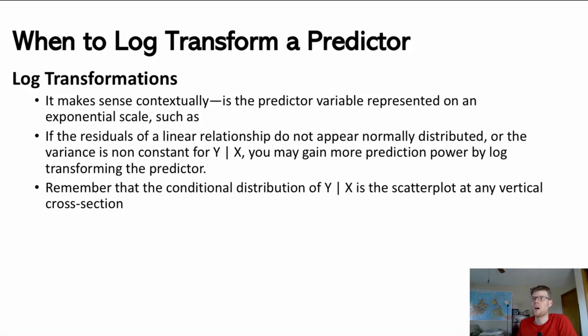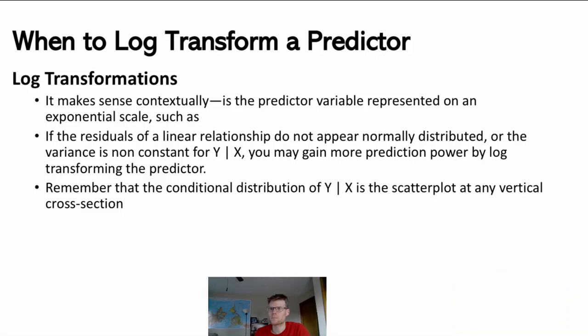Just a quick refresh here - when do we do a log transformation on a predictor? There's a couple examples where this might make sense to do. The first is contextually, if it just makes sense with the particular variable that we're looking at. Oftentimes if we have a variable that is an exponential form, so oftentimes variables that represent a percentage or ratio with respect to another variable, it might make sense to do this. For example, when I have a variable that represents the risk or the percentage relative to something else, then the scale from zero to one is equivalent to the scale from one to infinity. So I get a highly exponential variable where the distance from 0.5 to 0.8 is not the same distance as 1.4 to 1.7.